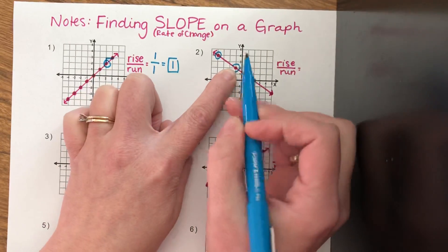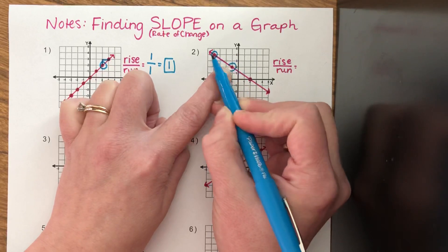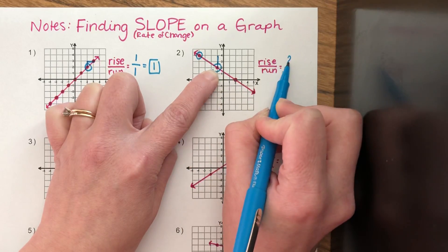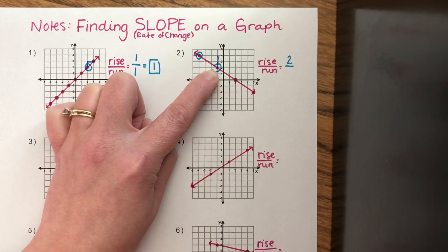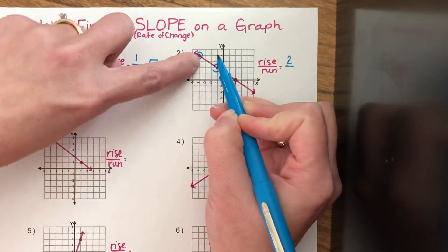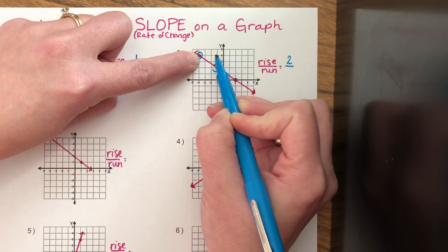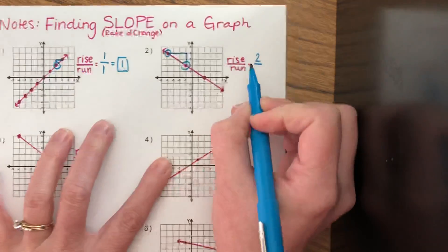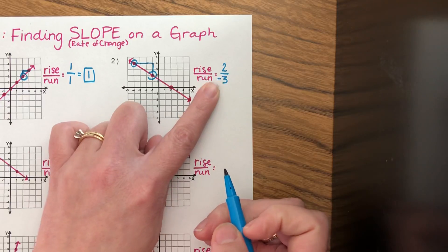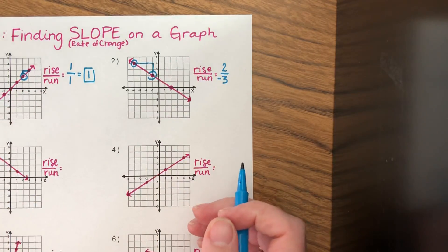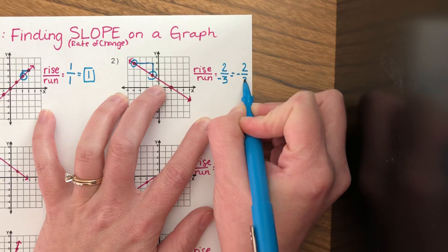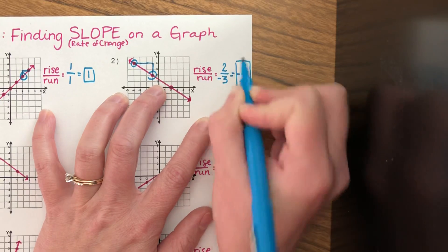I always start from the bottom. From the bottom to get to the next point, I went up one, two. So my rise is a positive two, because I went up and up is positive. Now to get to the next point, I went left one, two, three. Left is a negative movement, so my run is a negative three. But a numerator and a denominator are not individually negative — it's actually the whole fraction that's negative. So there's my answer.